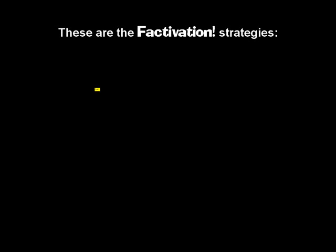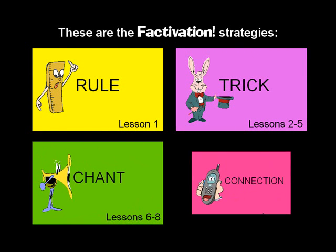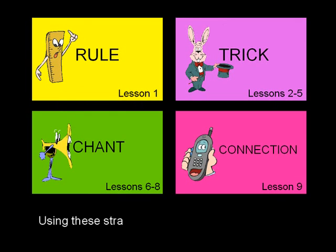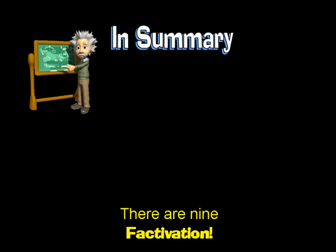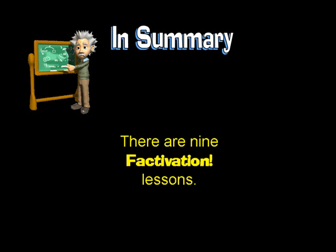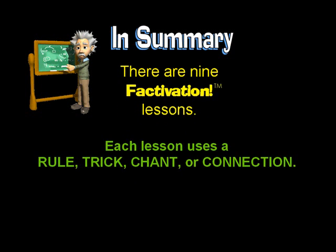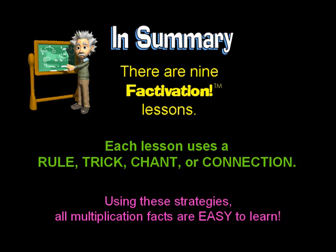To review, these are the factivation strategies: rule, trick, chant, and connection. Using these strategies, you will learn every fact. There are nine factivation lessons. Each lesson uses a rule, trick, chant, or connection. Using these strategies, all multiplication facts are easy to learn.